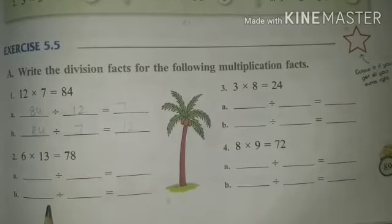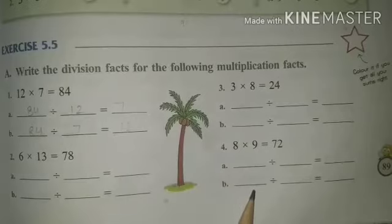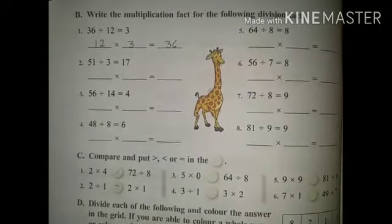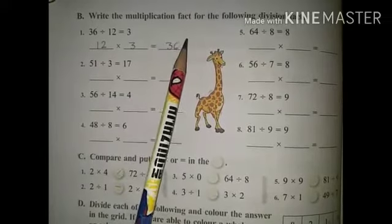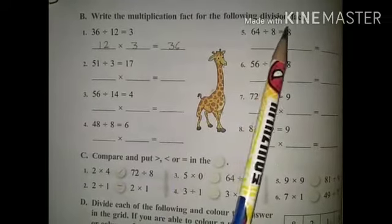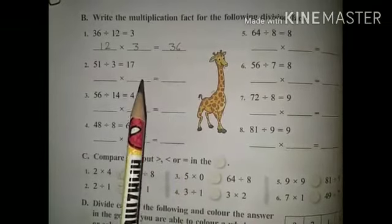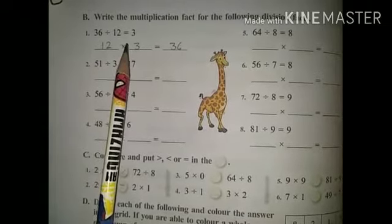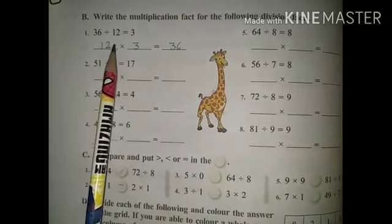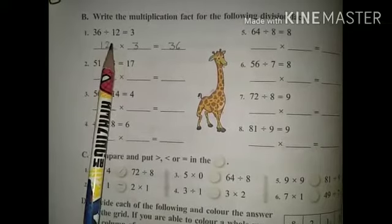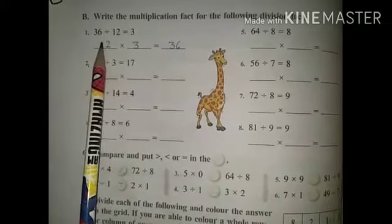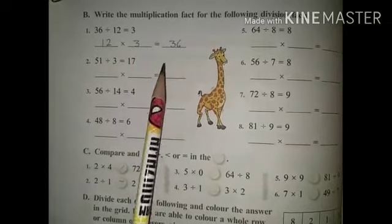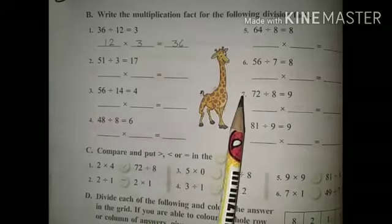Same as it is, second, third, and fourth questions we will solve in the book. Next, Point B: write the multiplication fact for the following division fact. First question: 36 divide 12 equals 3. So we write 12 multiply 3 equal to 36.